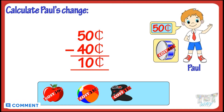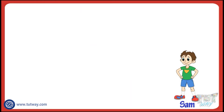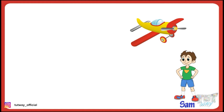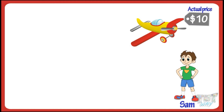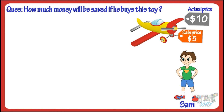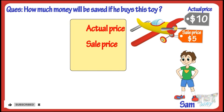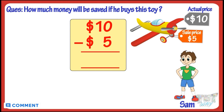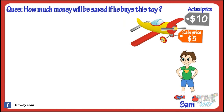Let's take another example. Sam goes shopping and chooses an airplane to buy for himself. It's on sale — earlier it was for $10, but now it is for $5. So how much money will be saved if he buys this toy? Let me help you calculate. You have to find the difference between the actual price and the sale price. We will be subtracting $5 from $10 to get the money he will be saving. The difference is $5, so $5 will be saved.